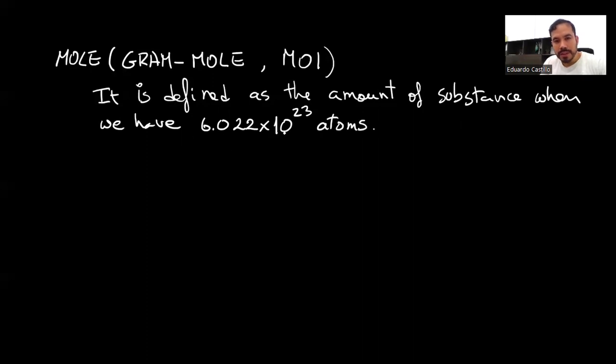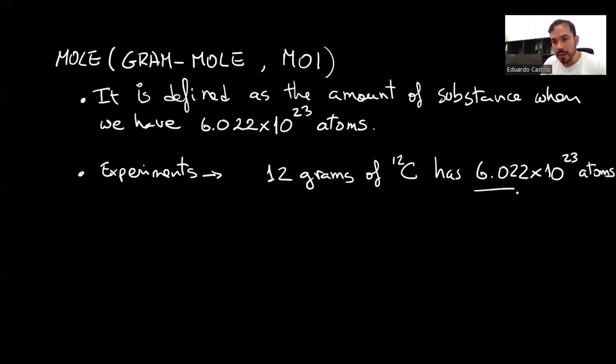How does this number come to play a role here? Well, because it was determined experimentally that 12 grams of carbon-12 has 6.022 times 10 to the 23 atoms. And this number is what we know as the Avogadro's number.